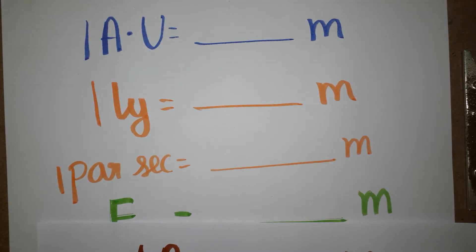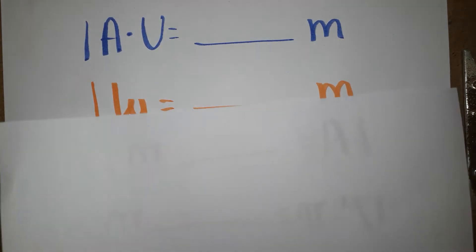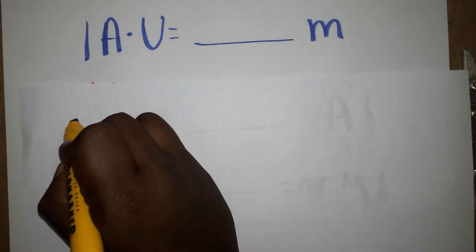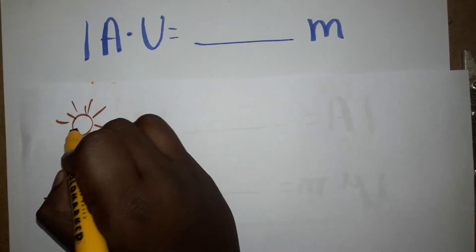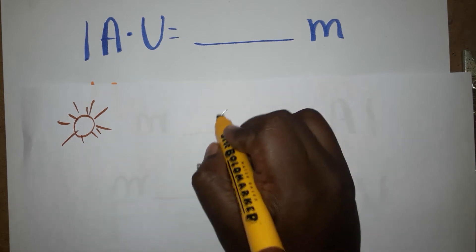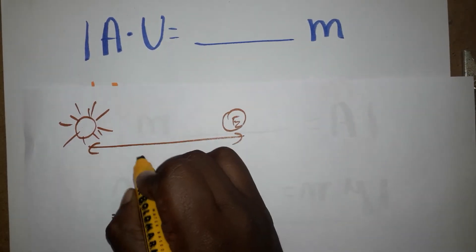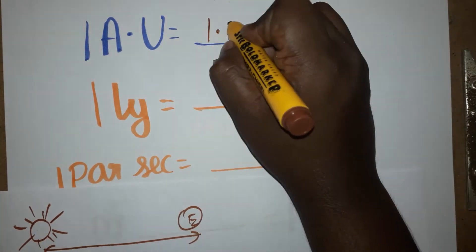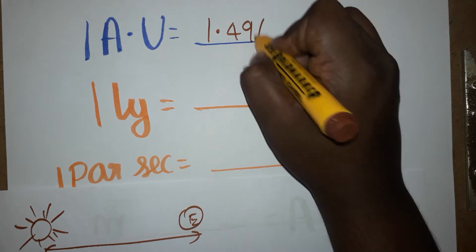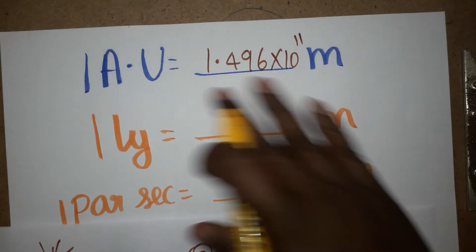If you like my channel please subscribe. First we will see one astronomical unit (AU) equals dash meter. One AU is the distance between the sun and earth. It is a fixed value. The distance between the sun and earth is called one AU. This is going to be 1.496 into 10 power 11 meter.